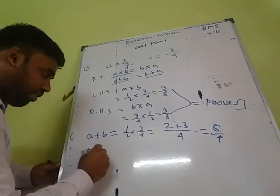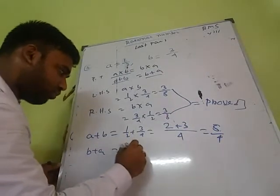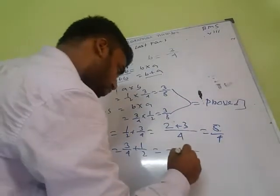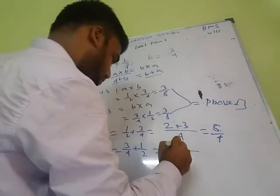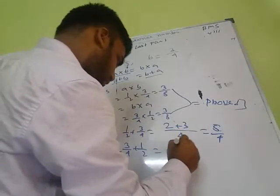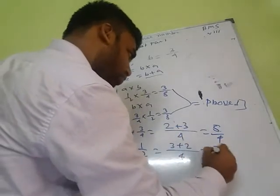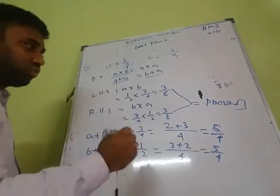And B plus A equals 3 by 4 plus 1 by 2. This also simplifies to 3 by 4 plus 2 by 4, which gives 5 by 4. So A plus B equals B plus A, confirming the commutative property under addition.